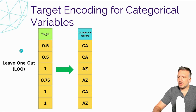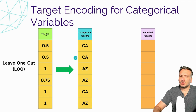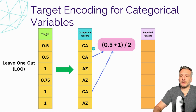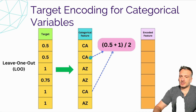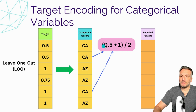I want to show you the leave-one-out technique, which is used to target encode a categorical variable without using the information of the target. The idea is to compute the average of the target variable for a specific row without using the value of the target for that row. For example, to compute the encoded value for the category CA for a specific row, we use the values of the other rows where CA appears. We have two other instances of CA — one with target value 0.5 and one with target value 1 — so the average is 0.5 plus 1 divided by 2.